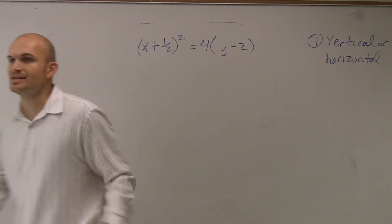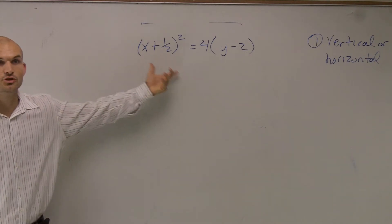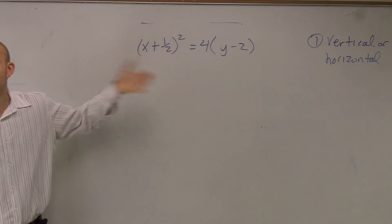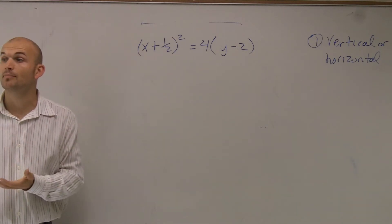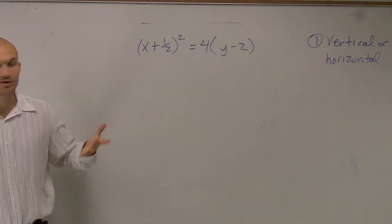And what we notice is since this has an x squared, since this has an x squared, this is going to be a vertical axis of symmetry. So that means my parabola is either going to open up or it's going to open down, right? And that's good, that's a parabola that we're used to, we remember those.